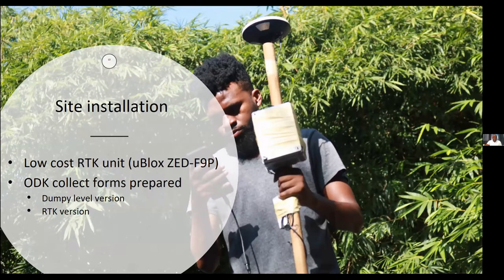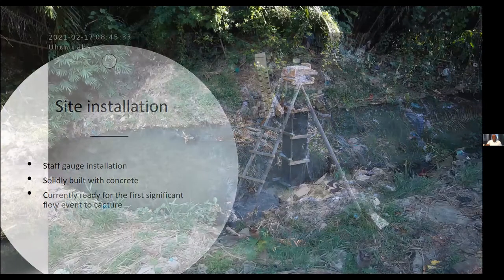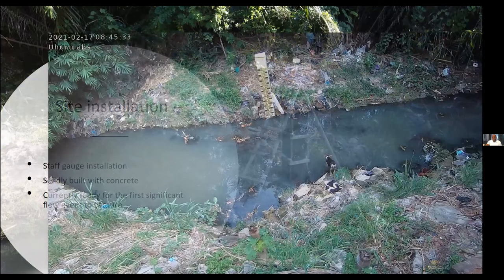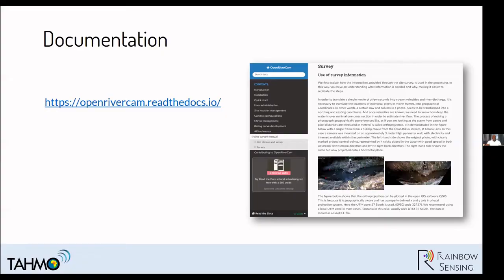An additional benefit is that we use the low-cost RTK units to do simple bathymetry. We can also use spirit levels or dumping levels to do this easily, as these are available locally. For the gauge plates, you don't need to import one — you can build them locally. We also have good documentation available at openrivercam.readthedocs.io.